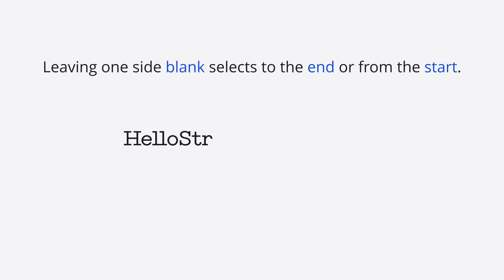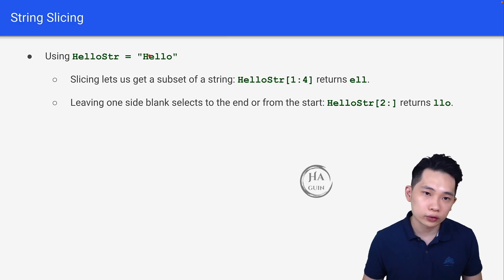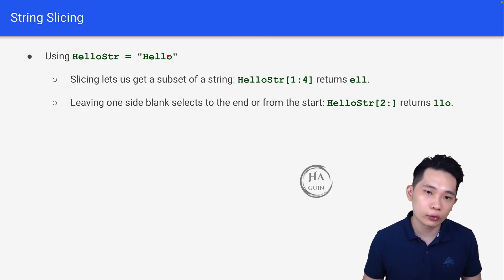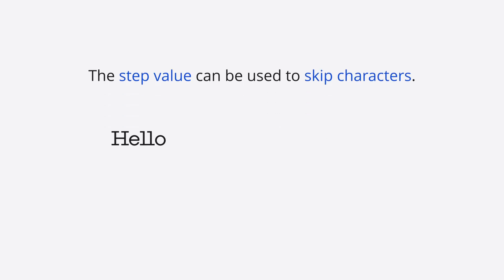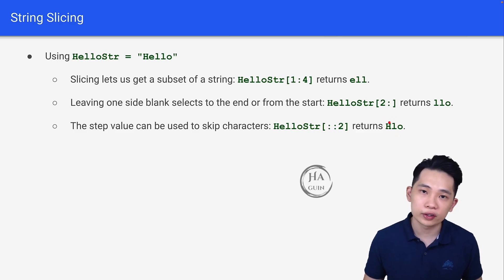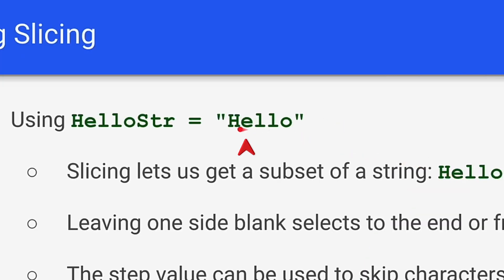Leaving one side blank selects to the end or from the start. hello_string[2:] returns 'llo', starting from index two to the end. The step value can also be used to skip characters: hello_string[::2] returns 'Hlo'. Think of step two as taking every other character — H, then l, then o.